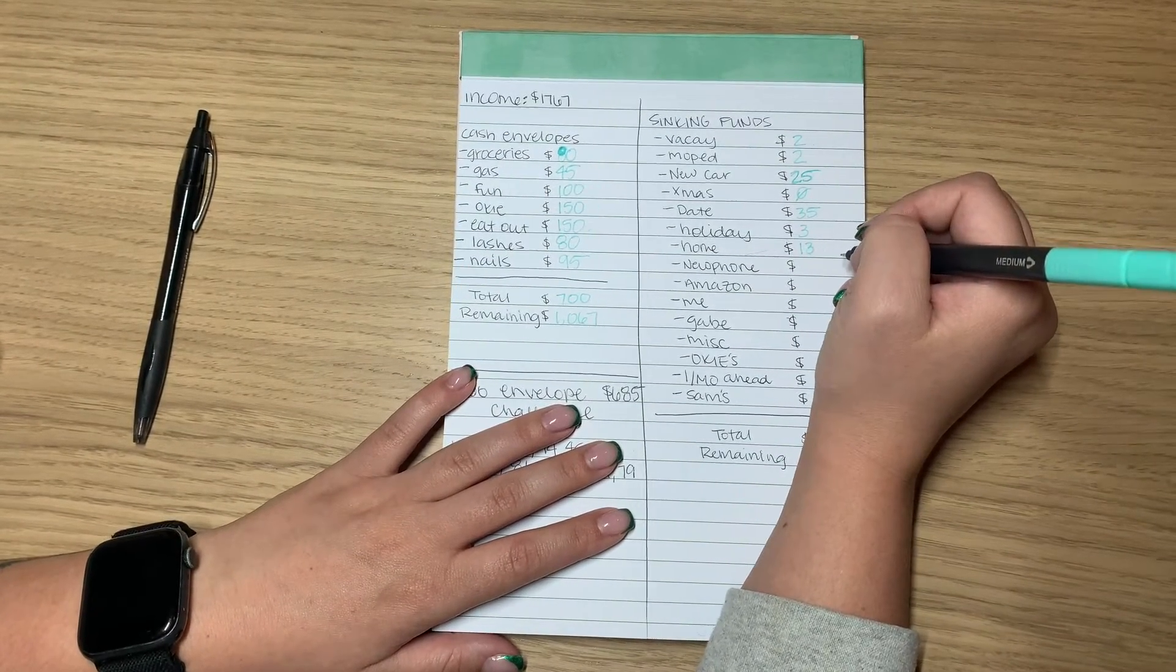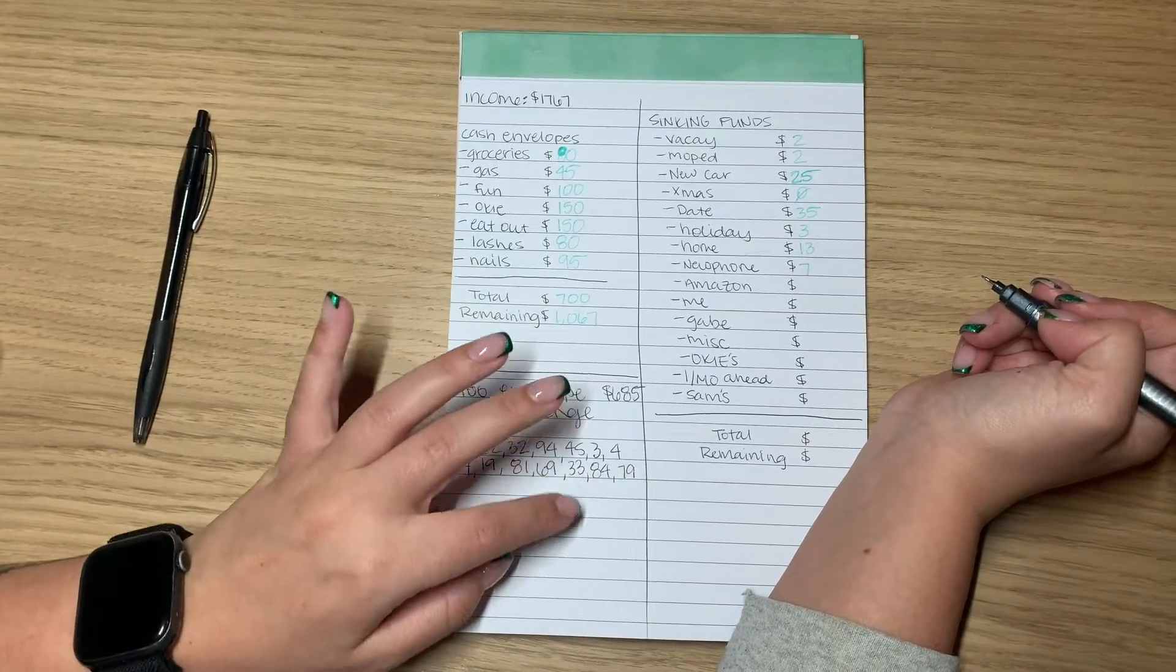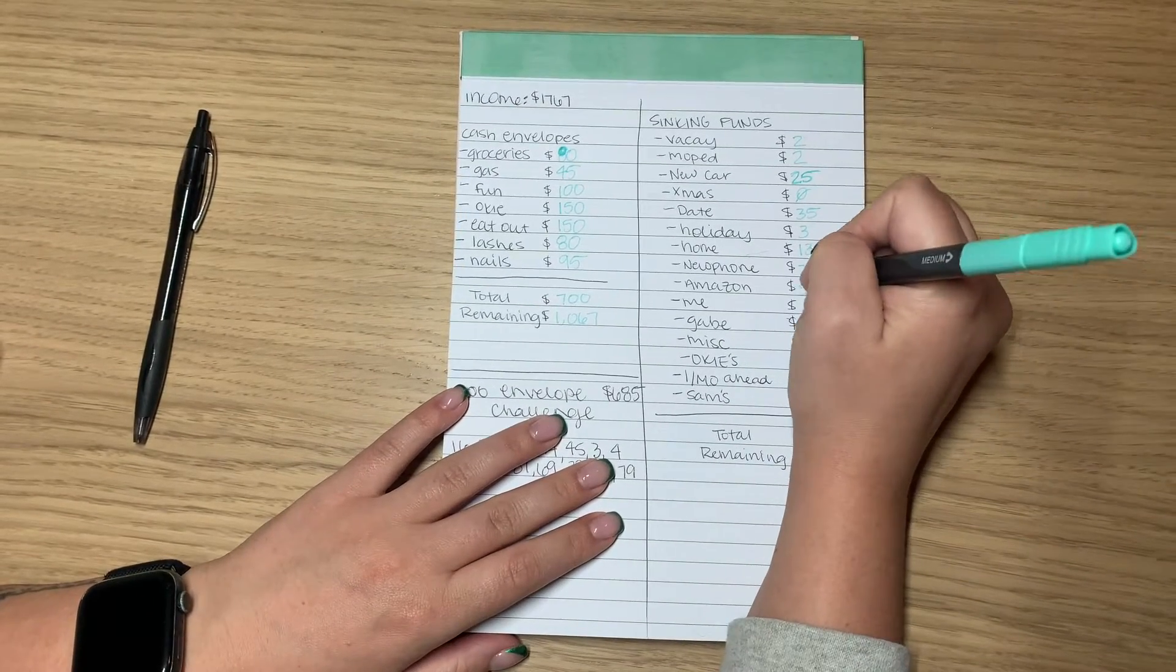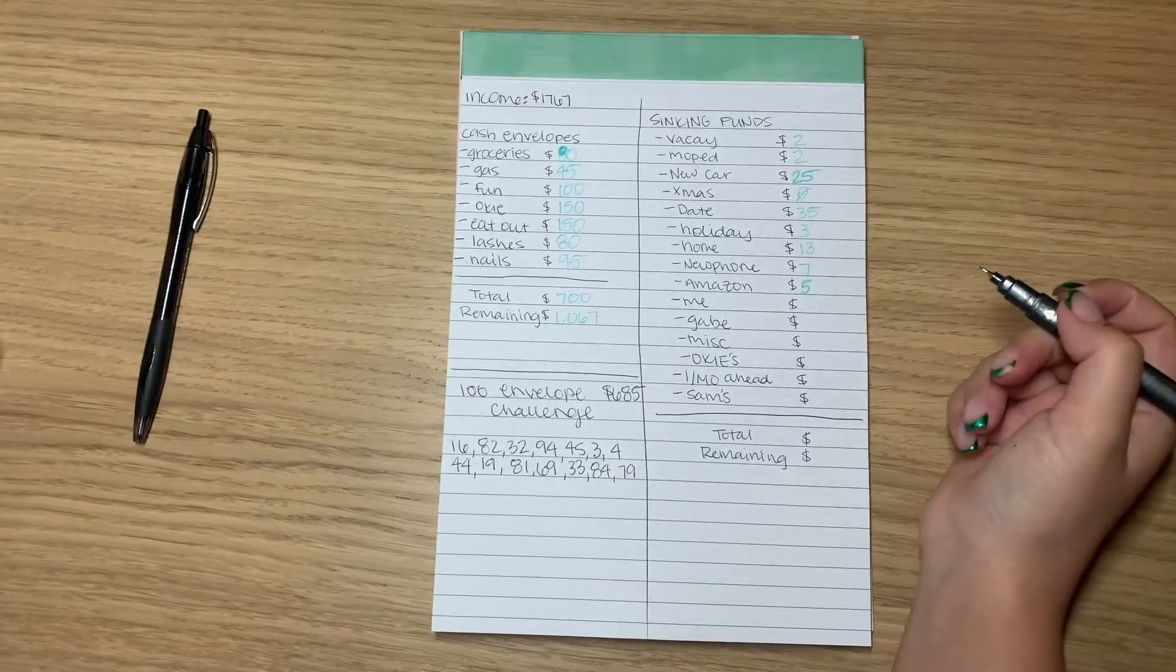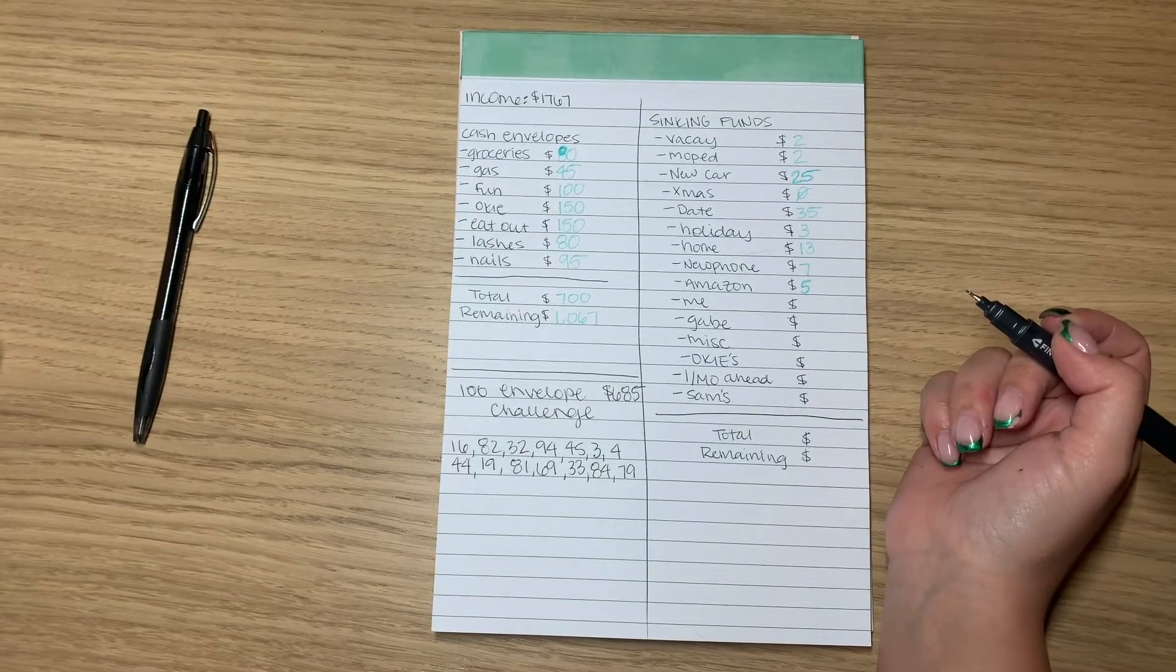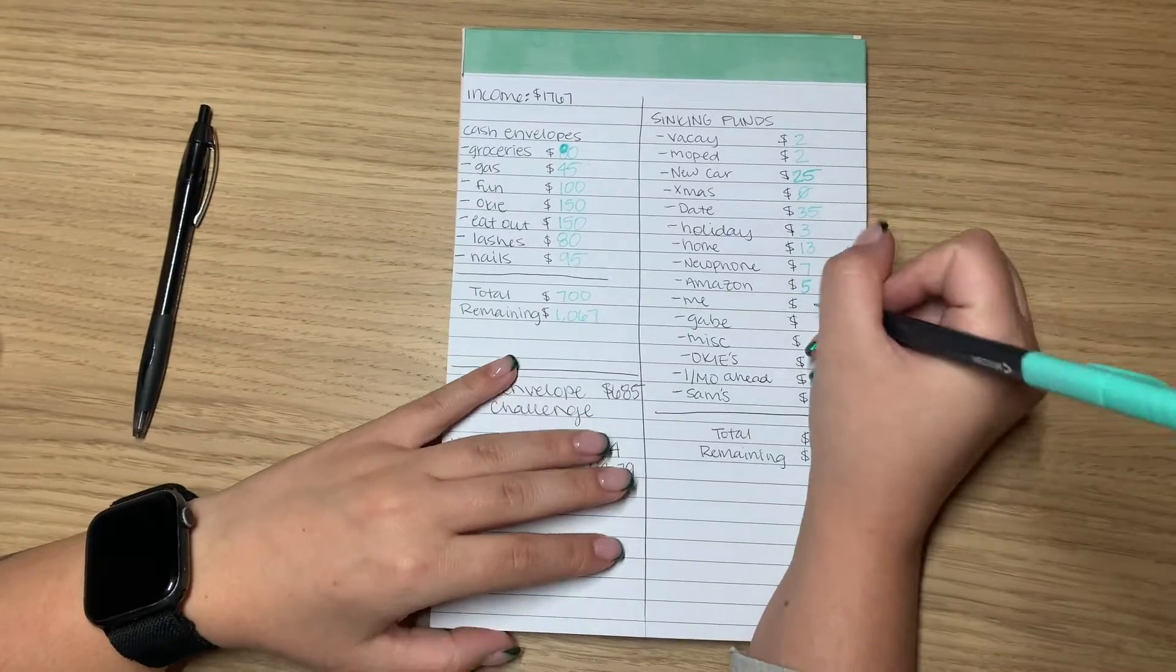New phone is getting $7. My phone's fine right now, but I can tell I'm going to need one soon. Amazon gets its normal $5 a week just for my Amazon subscription. It's due in like September or something. I figured out if I put $5 in every paycheck, I'll have it by the time it's due.